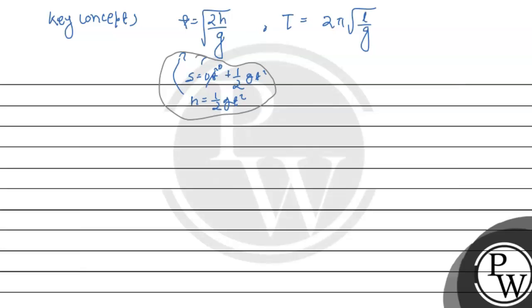We need to find g on the other planet. Capital G times M divided by R squared, where R is radius and M is mass of the planet. Since the radius is the same and mass is one by two,